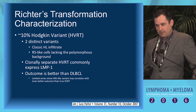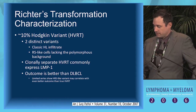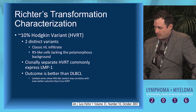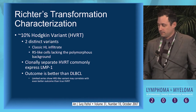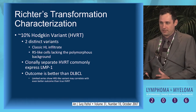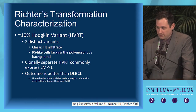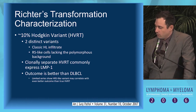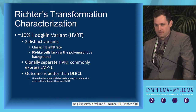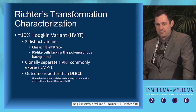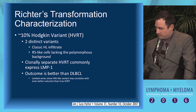Regarding clonality, it's difficult to extract Reed-Sternberg cells from these polymorphic backgrounds for genetic assessment. Importantly, many of these Hodgkin transformations are EBV positive — that's how you can often separate whether it's likely to be clonally related. EBV-positive Hodgkin transformations are typically not clonally related, which relates to the fact that CLL cells are notoriously difficult to infect with EBV. The EBV-negative ones are the ones that appear clonally related to the underlying CLL.